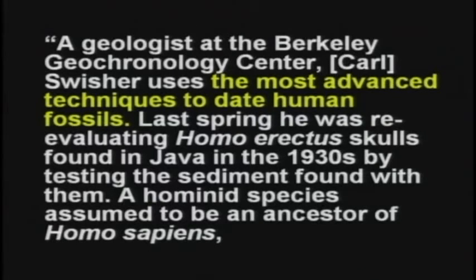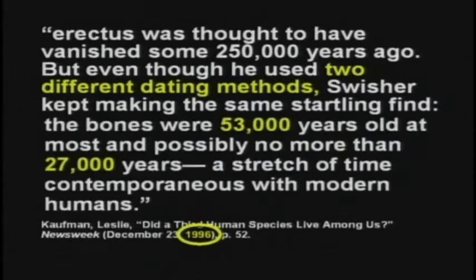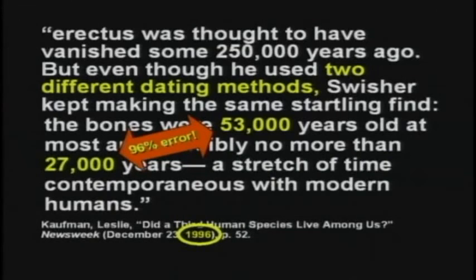In 1996, Carl Swisher at Berkeley used the most advanced techniques to date human fossils — Homo erectus skulls found in Java in the 1930s. The species was supposed to be extinct for a quarter million years. He used two different dating methods and kept making the same startling find: the bones were 53,000 years at most and possibly no more than 27,000. He's looking for a quarter million as his answer but keeps getting 53,000 to 27,000 — only one-fifth of what he wants, still a 96% error. Is it 27,000 or 53,000? This is not an exact science.